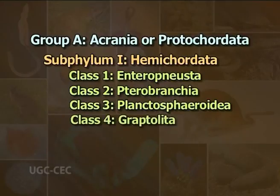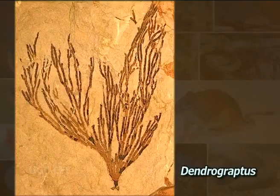Class 4: Graptolita. The fossil graptolites — example Dendrograptus — were abundant in Ordovician and Silurian periods. These are often considered as an extinct colonial class of Hemichordata. Their tubular chitinous skeleton and colonial habits show an affinity with Rhabdopleura.